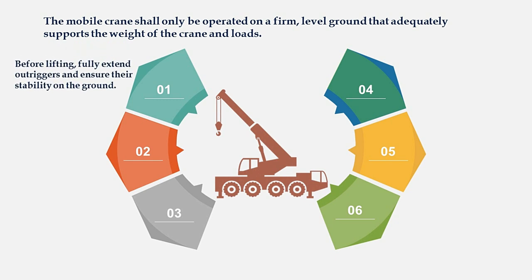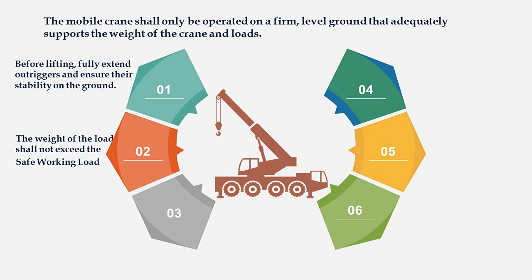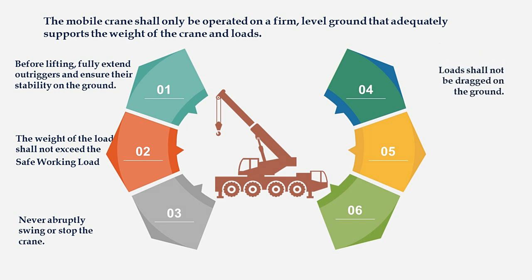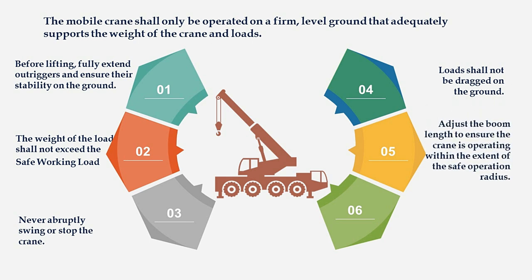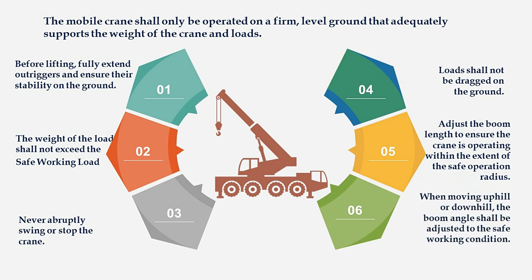Before lifting, fully extend the outriggers and ensure their stability on the ground. The weight of the load shall not exceed the safe working load. Never abruptly swing or stop the crane. The load shall not be dragged on the ground. Adjust the boom length to ensure the crane is operating within the safe operation radius. When moving uphill or downhill, the boom angle shall be adjusted to safe working condition.